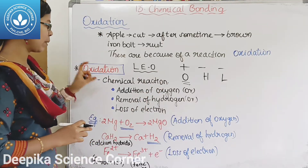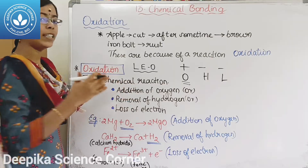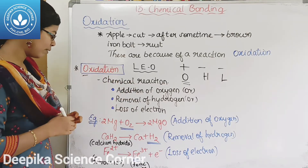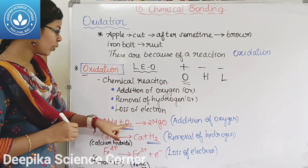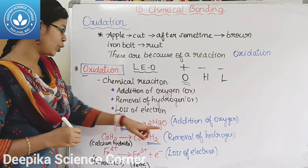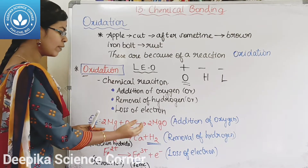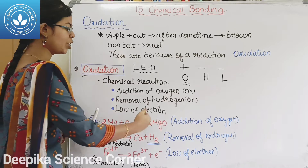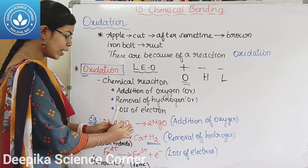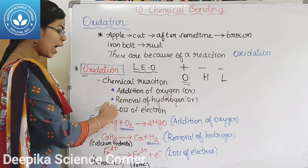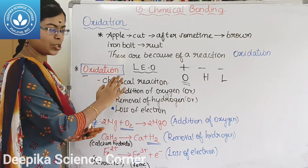Now the oxidation reaction is a chemical reaction. Let's look at this example. First example: 2Mg + O2 gives 2MgO. That means magnesium is added with oxygen and magnesium oxide is formed. So this is the addition of oxygen — this is the oxidation reaction.